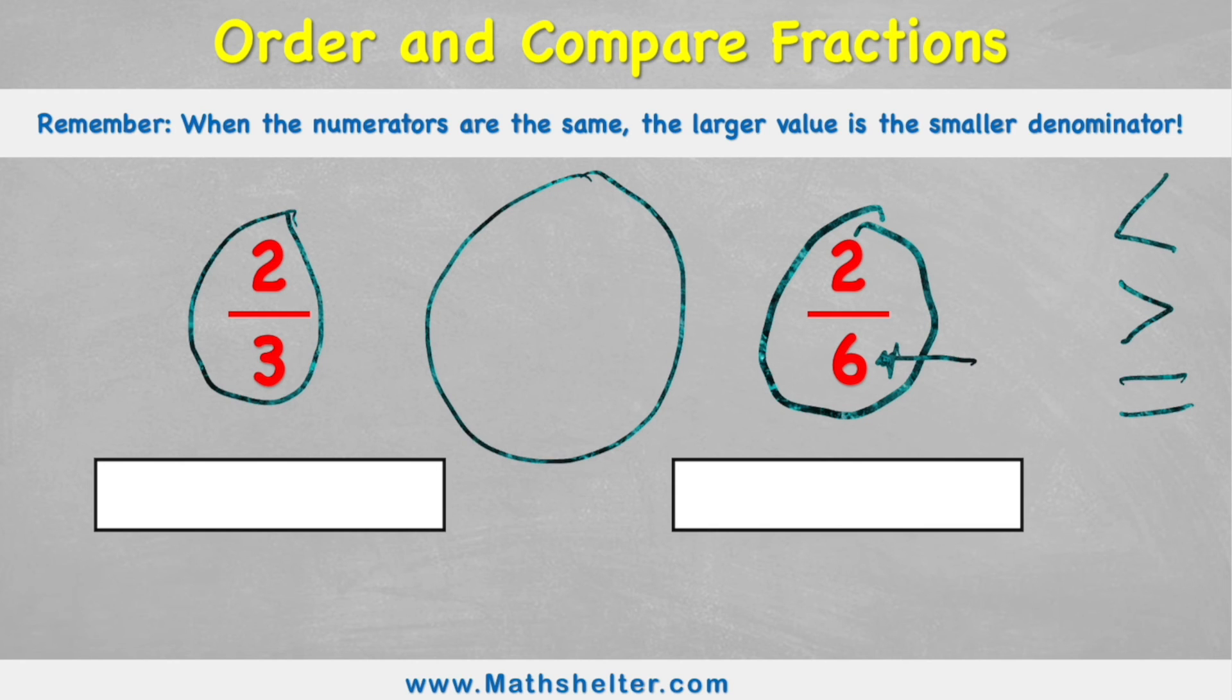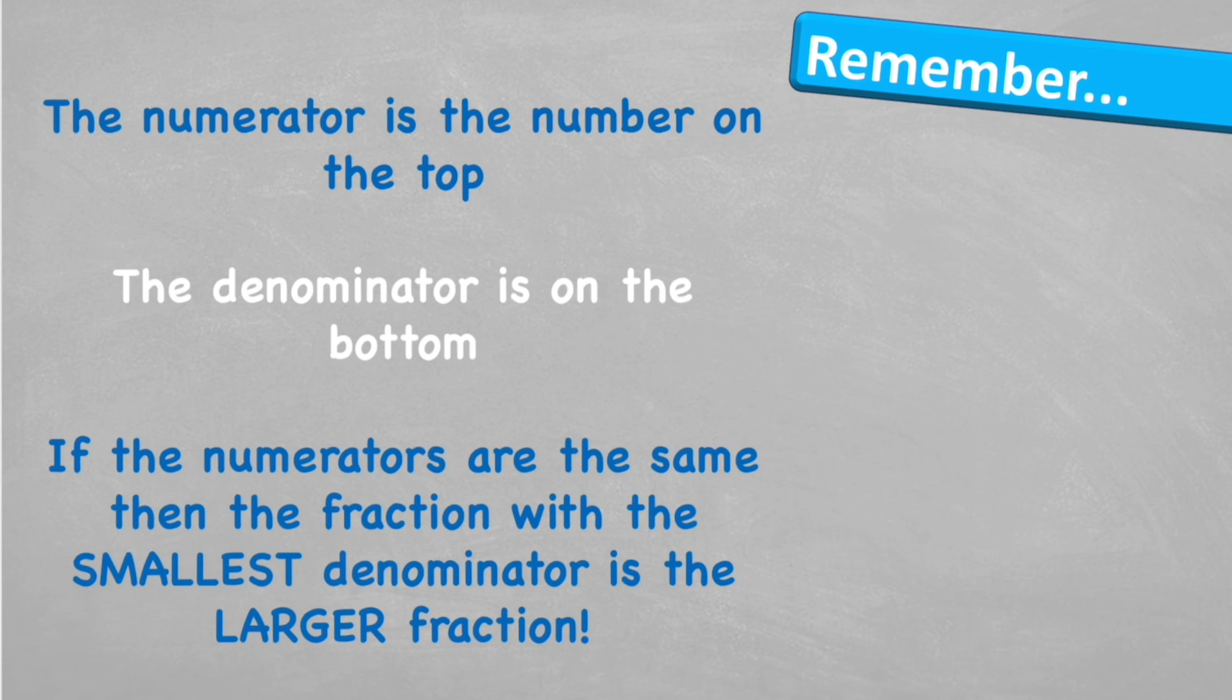No! Because remember, this now means that my chocolate bars have to be split into six. One, two, three, four, five, and six. Whereas this first one, my chocolate bars only had to be split into three. One, two, three. And when I get two pieces of each, we can clearly see which one is bigger. It would be my two-thirds. So I'd put two-thirds is greater than two-sixths. There you go.